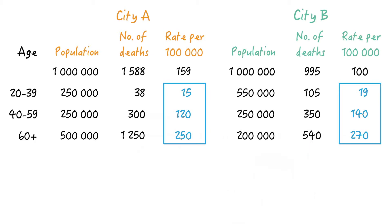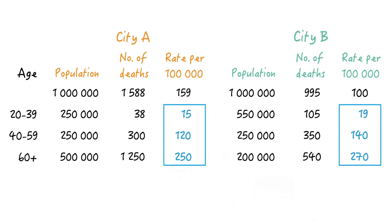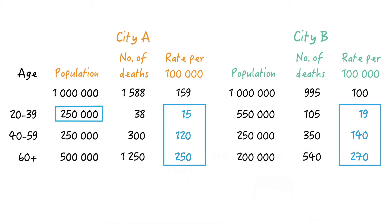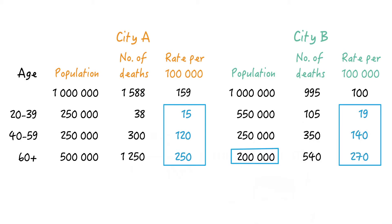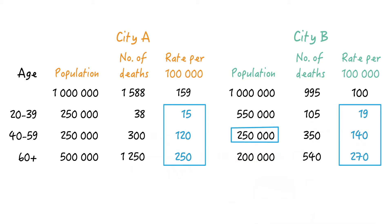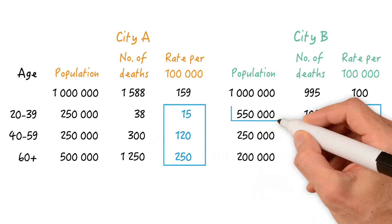Well, because of the age distribution. As you can see, City A is way older — 50% are 60 or above, one quarter is 40 to 59, and one quarter is 20 to 39. In City B, on the other hand, only one fifth is 60 or above, one quarter is 40 to 59, and over half are 20 to 39. So actually, the risk of death is higher in City B, but because of the older age distribution in City A, more people died in City A, which is reflected in the overall mortality rate.